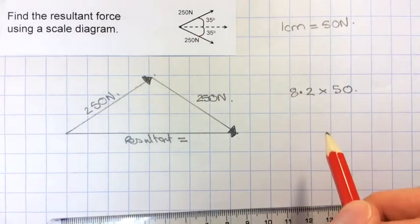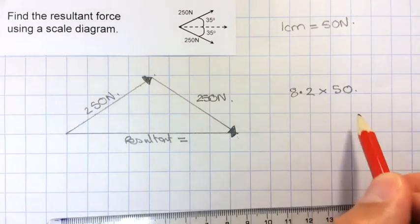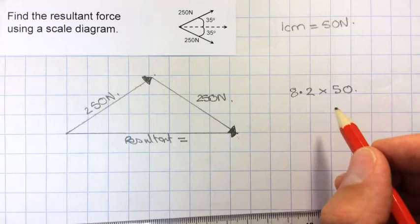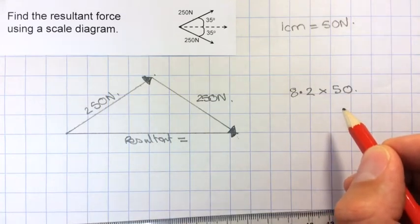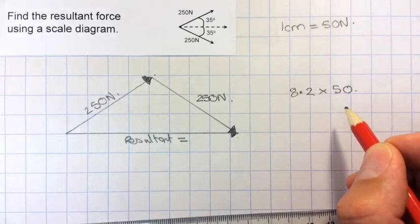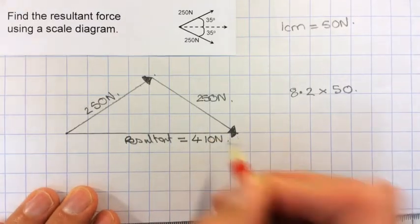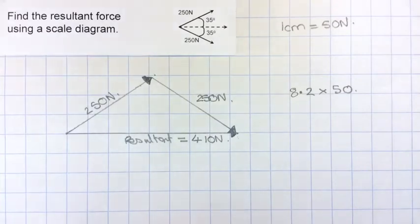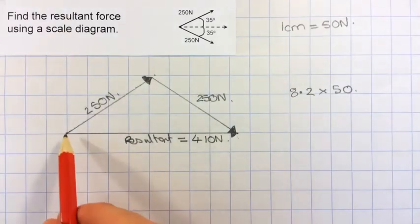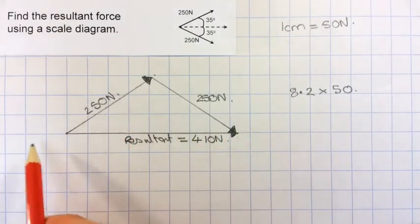That's going to give me 400 plus 0.2 times 50, which is going to be 10, so 400 plus 10 would give me a resultant of 410 N. I don't really need to measure the angle because in this case it's going horizontally.